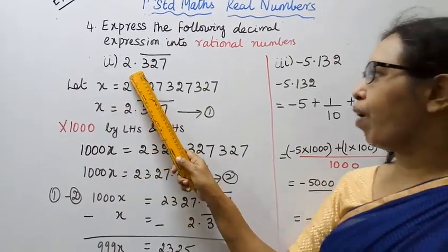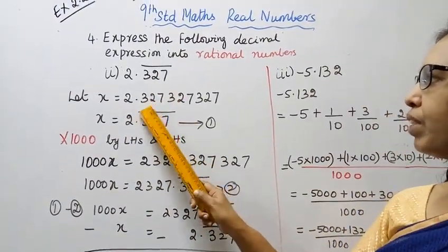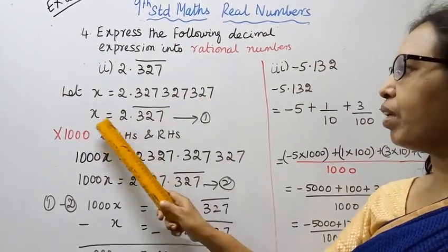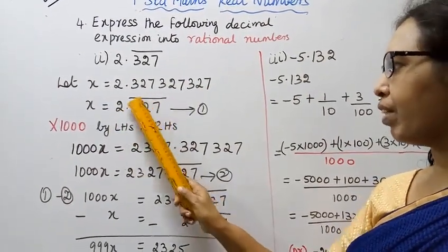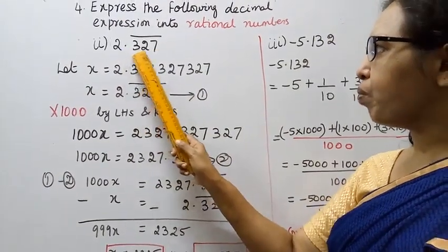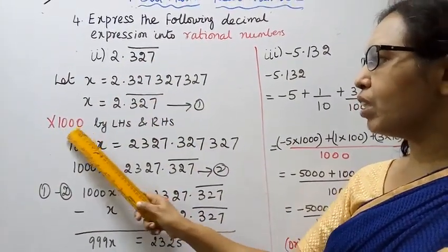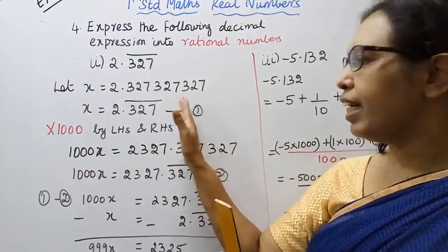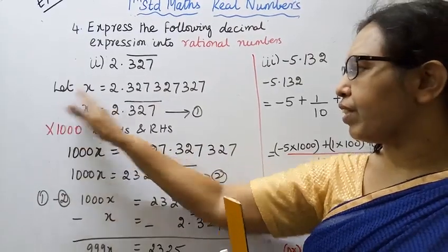Second problem, x equals 2.327̄. x equals 2.327327... non-terminating recurring. x equals 2.327 bar. This is equation 1.